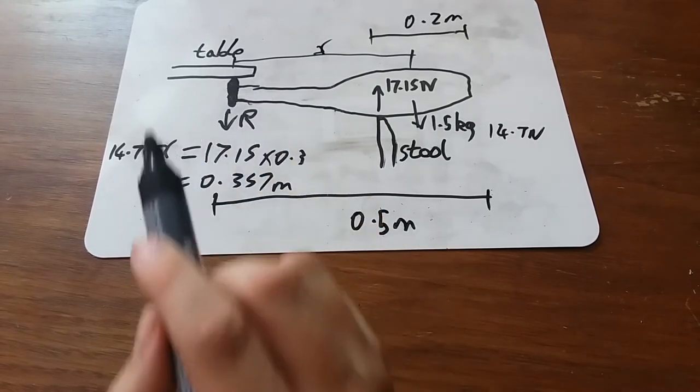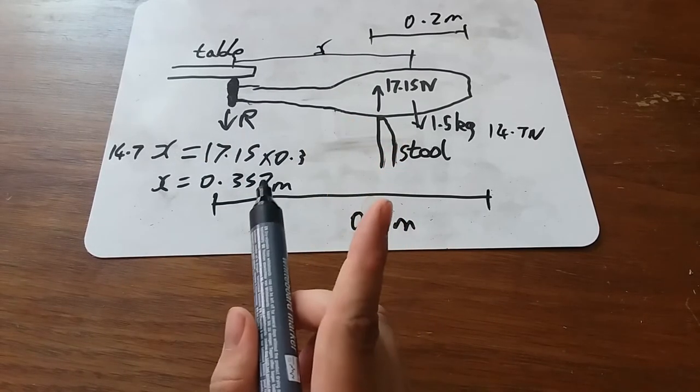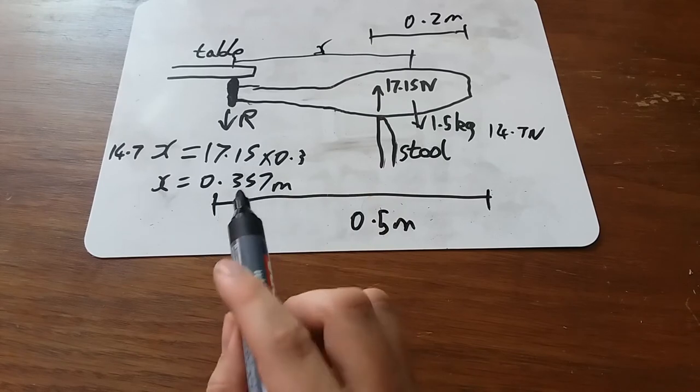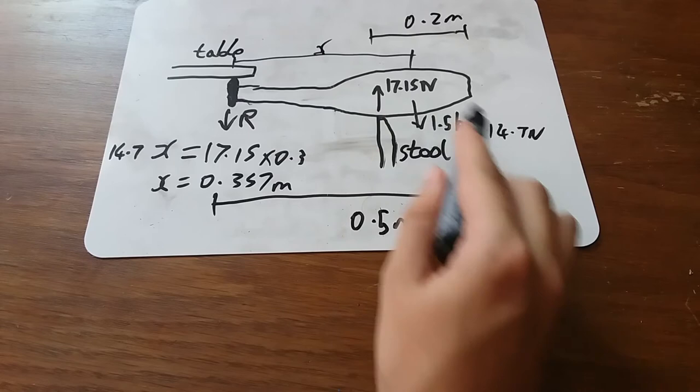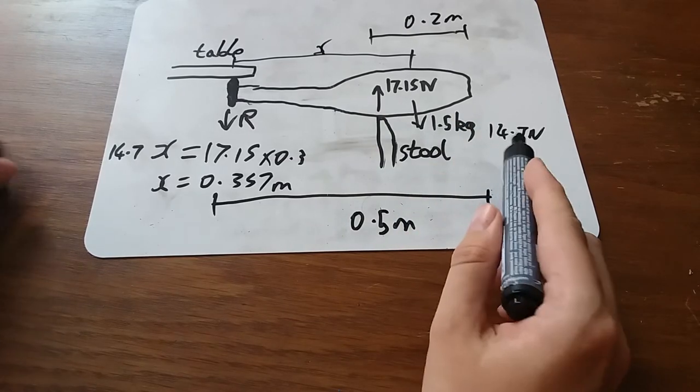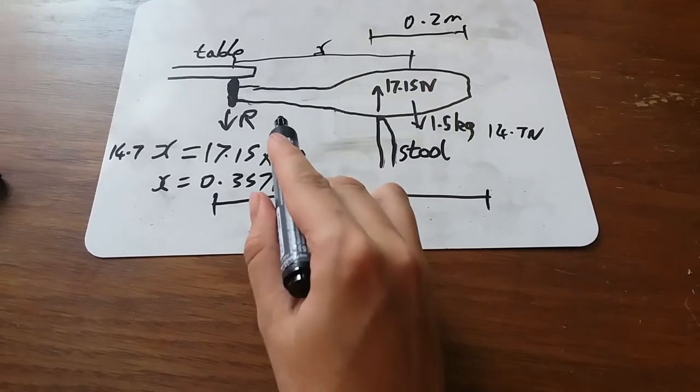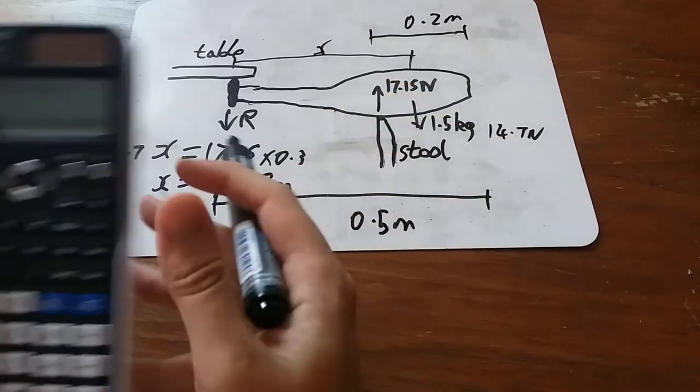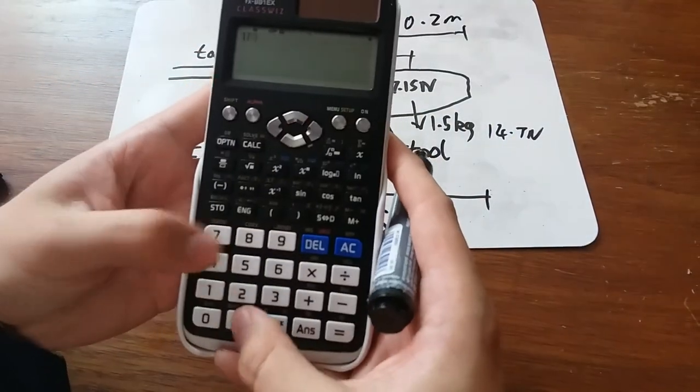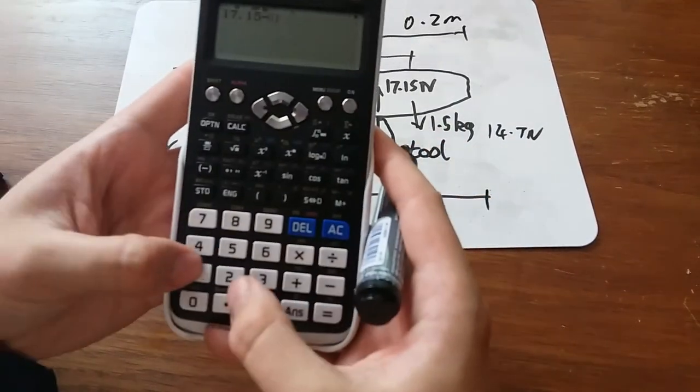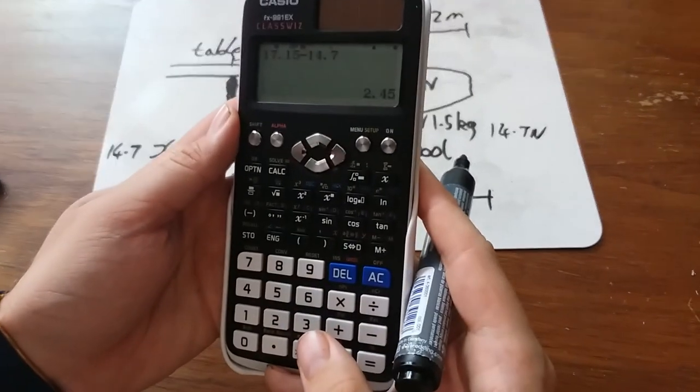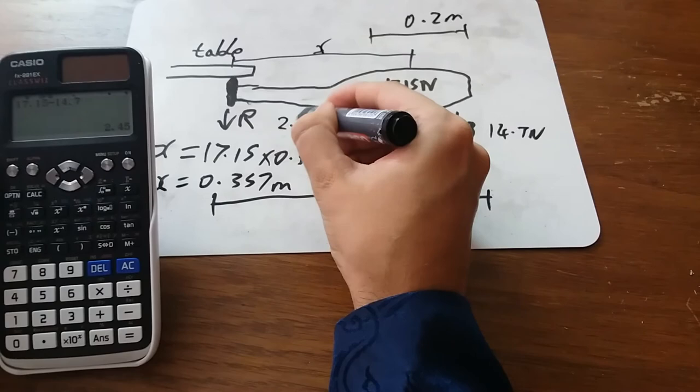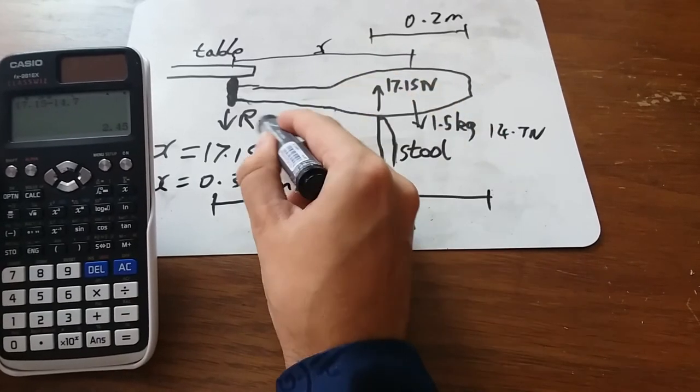Well, the other thing we can work out is R. We know that the total force up and the total force down have to be equal. Well, the total force up is 17.15 newtons. The total force down is 14.7 newtons. And so R must be what you add to this to get to this. And so calculation-wise, 17.15 minus 14.7, and we get 2.45. So 2.45 newtons. And that's what R is.